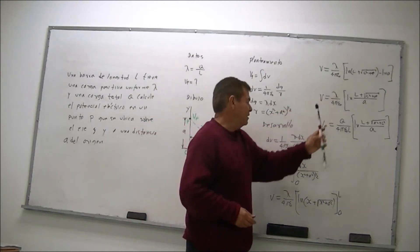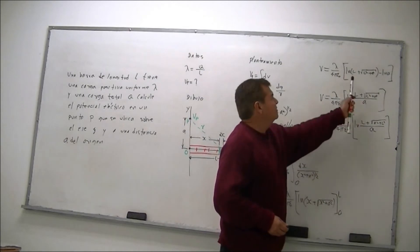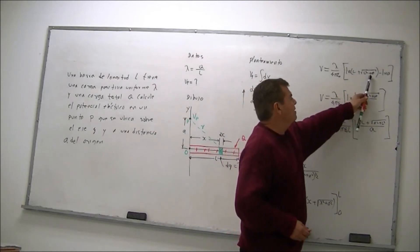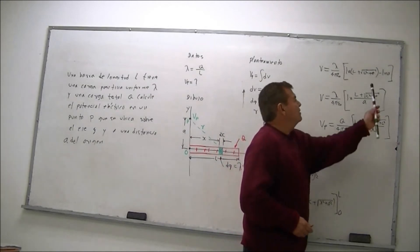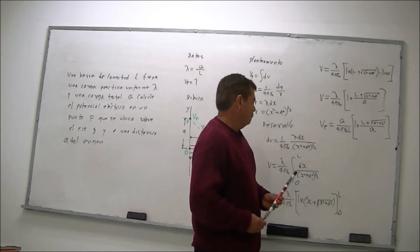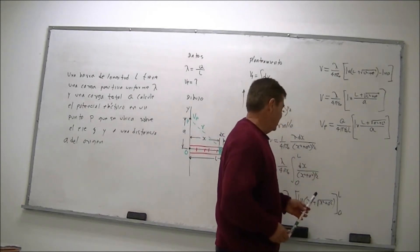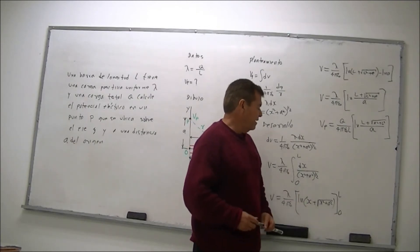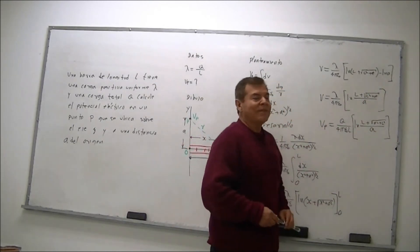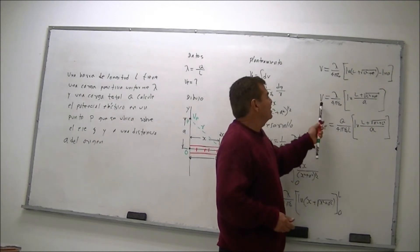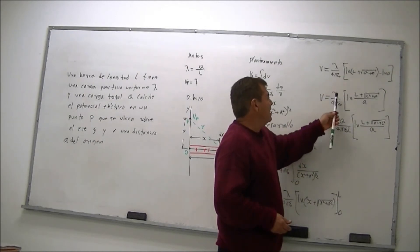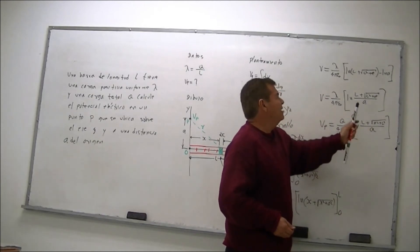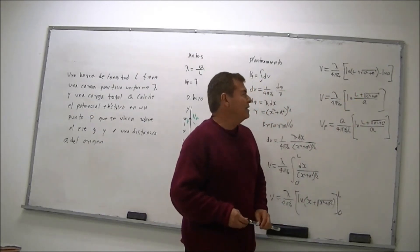Sustituyendo límites, sustituimos el límite superior L, y nos quedaría lambda sobre 4πε₀ multiplicando el logaritmo natural de L más raíz de L² + A², menos el logaritmo del límite inferior. En este caso, como el límite inferior es 0, sería 0 aquí y 0 aquí, entonces nos quedaría raíz cuadrada de A², que es nada más A. Esto lo podemos expresar también como V igual a lambda sobre 4πε₀ por el logaritmo natural de (L + √(L² + A²)) sobre A, ya que la diferencia de dos logaritmos se puede representar como una división.